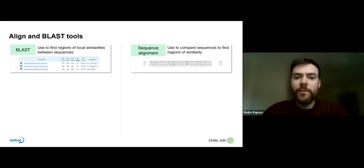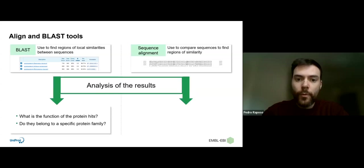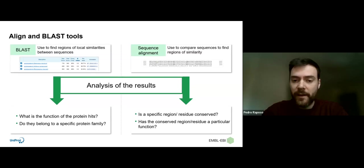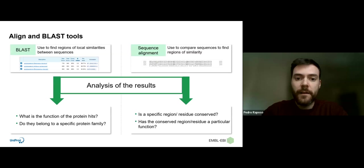The two main tools for sequence analysis are BLAST and Align. BLAST finds local regions of similarity between sequences, and Align compares sequences to find regions of similarity. With BLAST, you will get information to understand what the function of a protein is and if it belongs to a specific protein family. With sequence alignment, you will get information to understand if specific residues have a particular function, and it will allow you to visualize them better in the alignment.